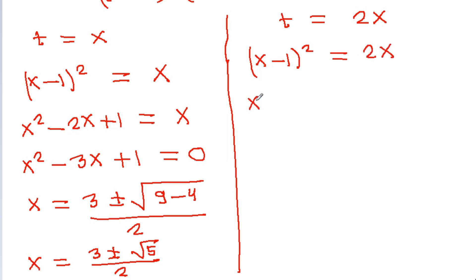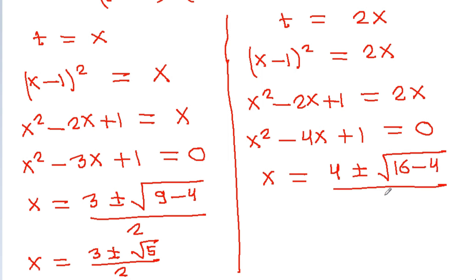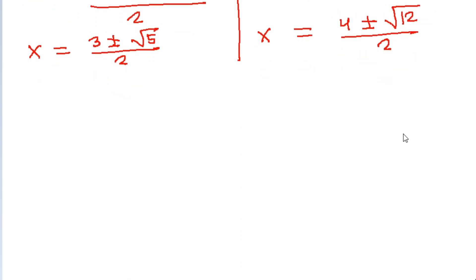When t = 2x: (x - 1)² = 2x, so x² - 2x + 1 = 2x, giving x² - 4x + 1 = 0. Then x = (4 ± √(16 - 4)) / 2 = (4 ± √12) / 2, so x = 2 ± √3.